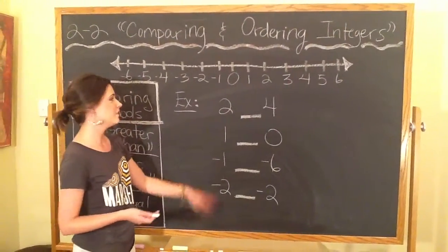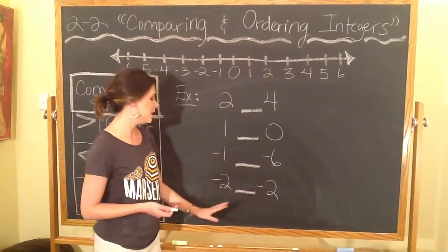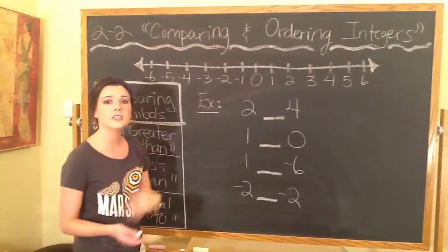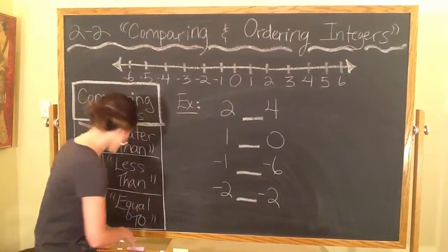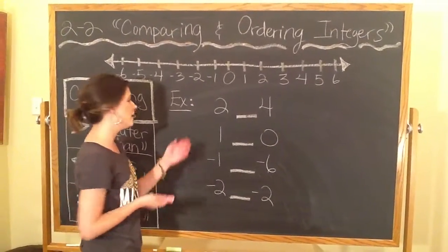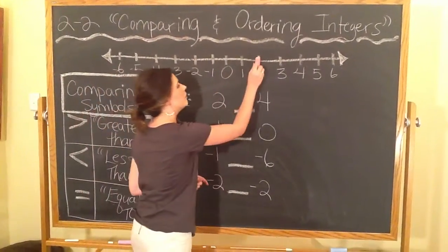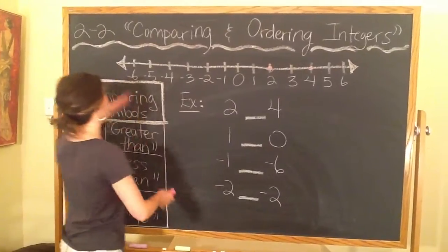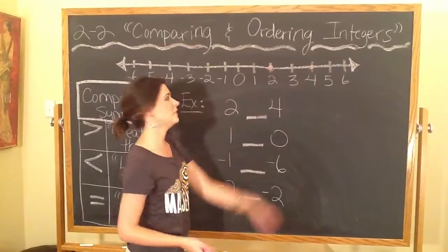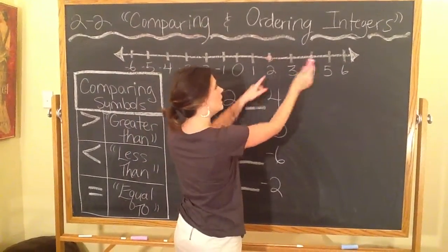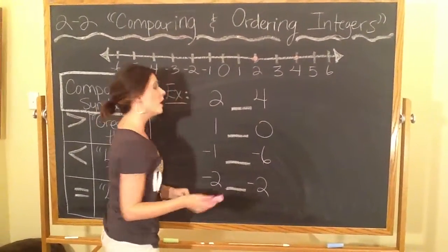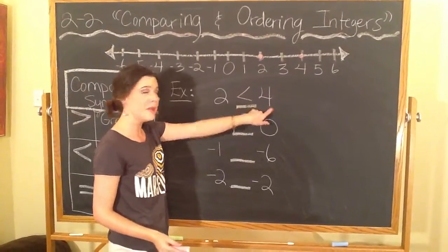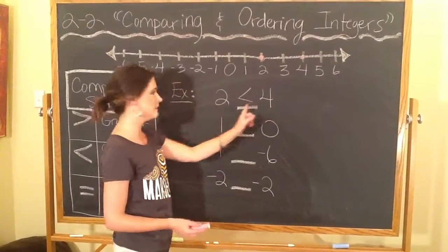Let's look at these pairs of numbers: 2 and 4, 1 and 0, negative 1 and negative 6, negative 2 and negative 2. We'll use the number line to figure out which is greater than, less than, or equal to. Find coordinate point 2 on the number line and mark it, then find 4 and mark it. When looking at a number line from left to right, the farther right you go the bigger the number. So 4 is bigger, our symbol opens toward 4, and we read: 2 is less than 4.